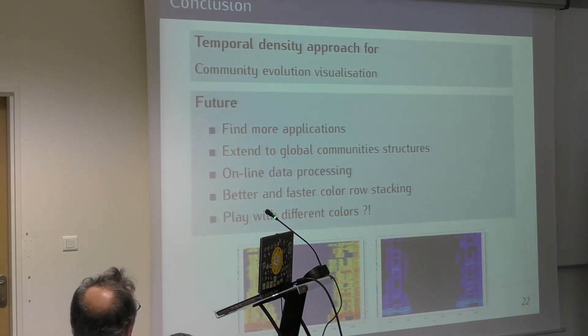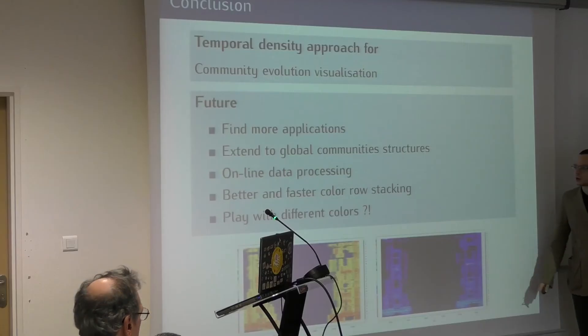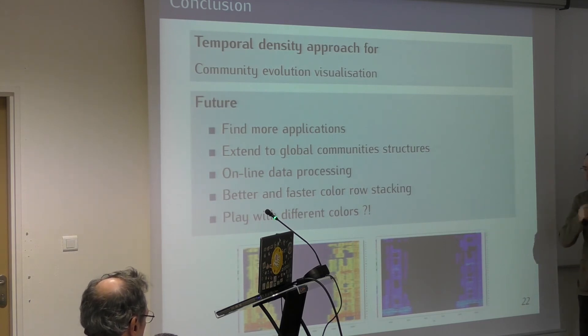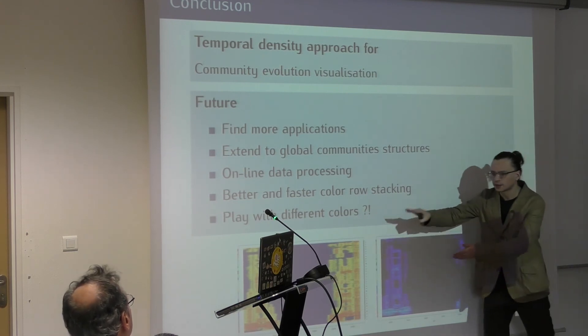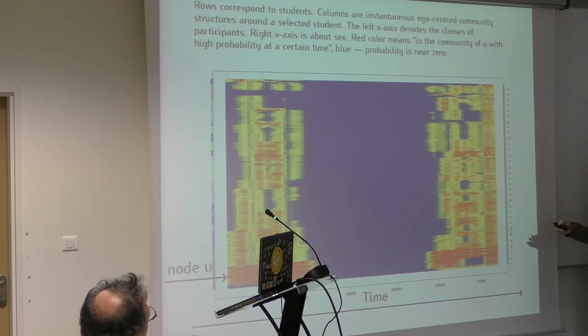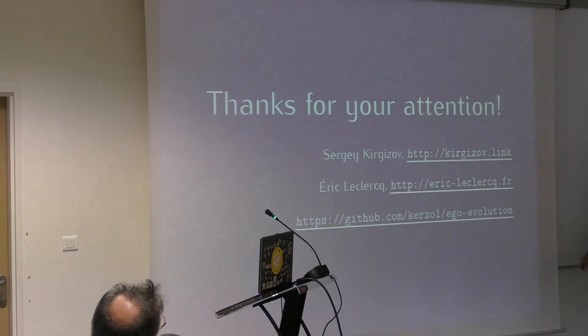In the conclusion, we developed some approach to temporal density with the main goal to visualize community evolution from all grounds, from all kinds of places. In the future, we will work, it will be better to find some more applications, extend to global community structures, perform some online data processing. How do we update our images? Because it's not so easy, because if you re-run the algorithms every time, the lines can change, and it's not good. So you need to guess the good order of lines. Maybe we should play with different colors, because it may be not so beautiful. Color depends on your domain, it depends on the meaning of the things, it can culturally be different also. So this is the same representation using another color. Thanks for your attention.